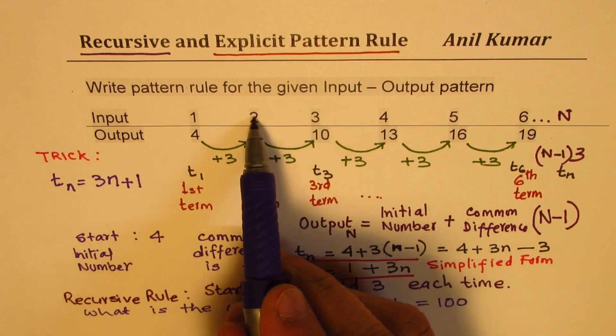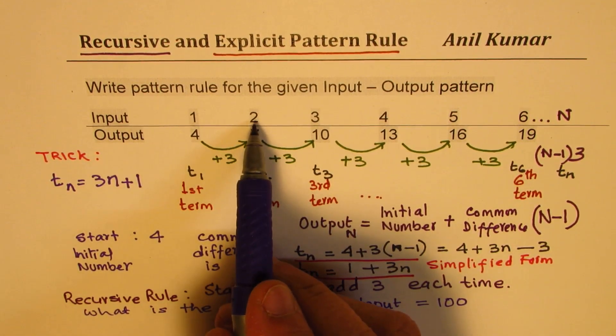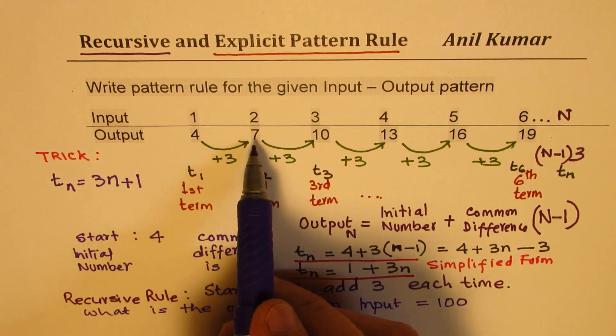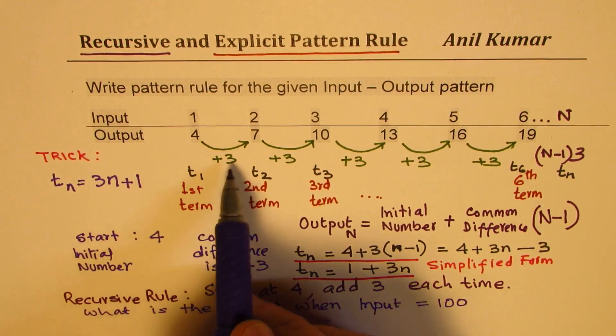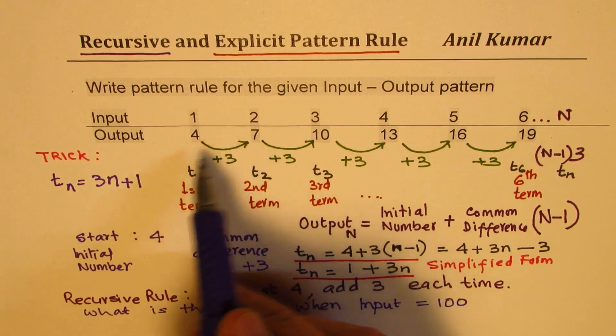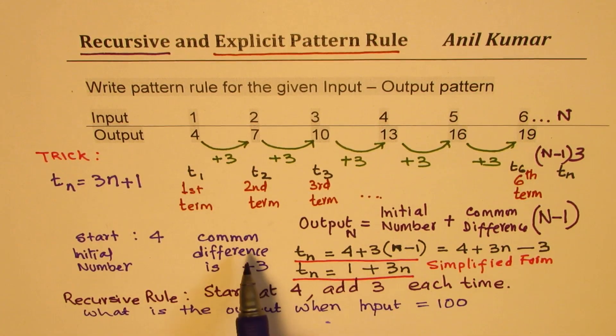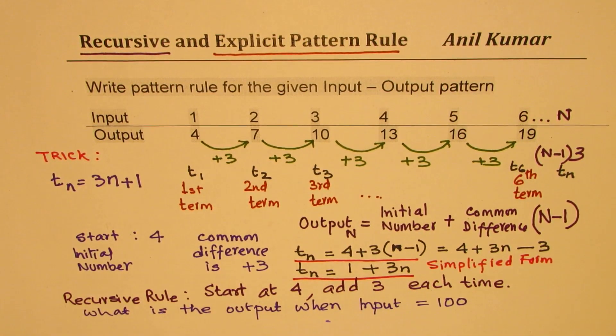For the second term, what is 3 times 2? 3 times 2 is 6. How do I get 7? By adding 1. So you get a pattern rule directly without using even the formula. Perfect.